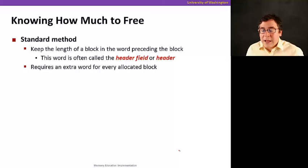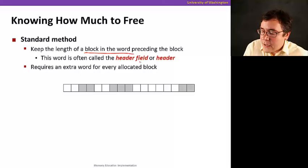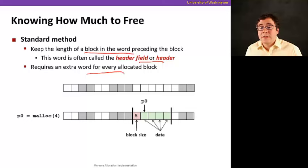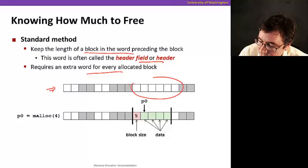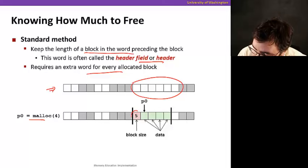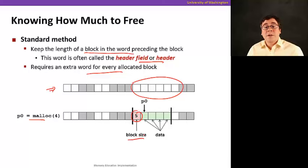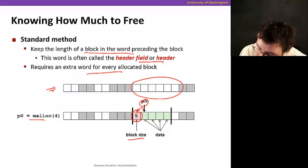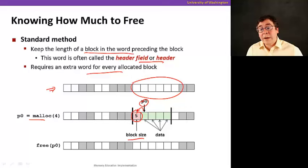Let's solve the first question first. So we need to know how much to free. The standard method is just to keep the length of a block in a word preceding the block. So we're going to have a header field. That's going to require some extra words. It's a little bit of overhead, but it will be worth it. So for example, here's our heap, and we have this free block here. When I call malloc, I decide to use this block. And now we're going to use one of the words here to store the block size.